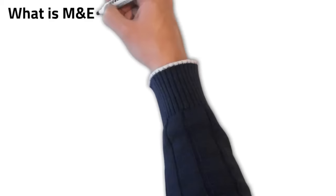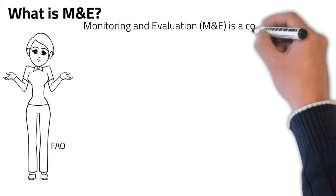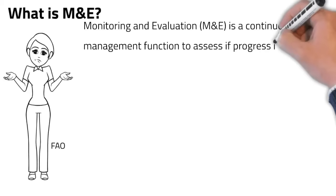Having understood these two different words, now let's try to define what M&E is. As per the Food and Agriculture Organization of the UN, monitoring and evaluation is a continuous management function to assess if progress is made in achieving expected results,